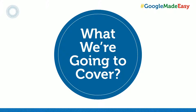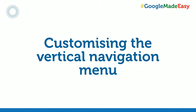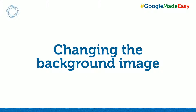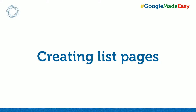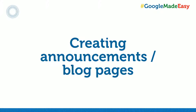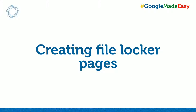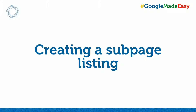We are going to cover our advanced session on Google Apps, which includes customizing the vertical navigation menu, changing the background image to get it looking personalized for your business, creating list pages, creating announcements and blog pages, file locker pages, and a subpage listing — so if you've got a parent page and you want a listing of all the subpages shown on the page, we'll show you how to do that.